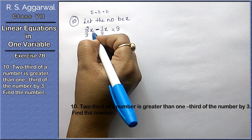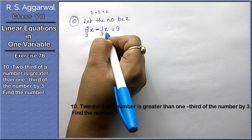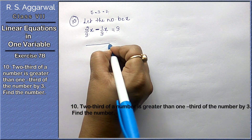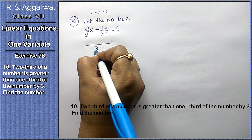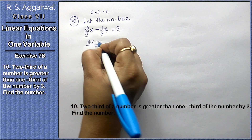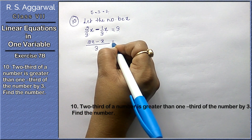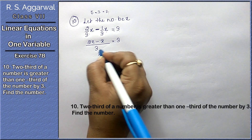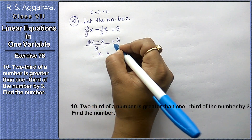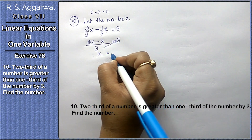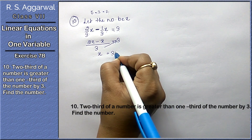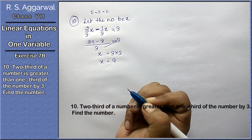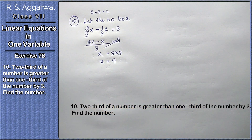Taking LCM, 2x minus x equals 9, so x equals 9. Hence the number is 9.